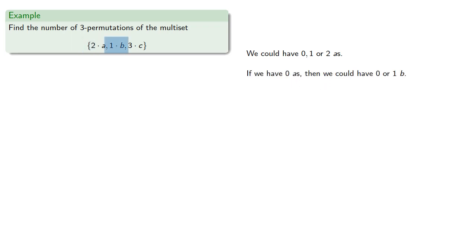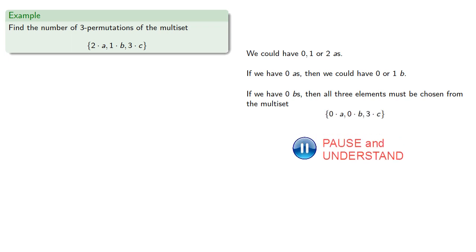If we have 0 a's, then we could have 0 or 1 b. If we have 0 b's as well, then all three elements must be chosen from the multiset with 0 a's, 0 b's, and 3 c's. And since the size of the permutation is the sum of the repetition numbers, we can use our formula to calculate the number of ways.